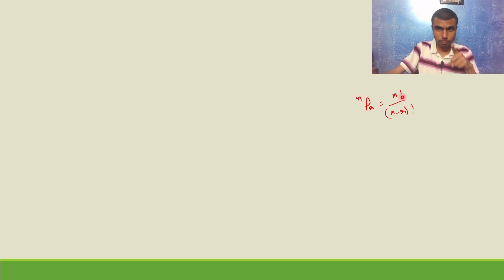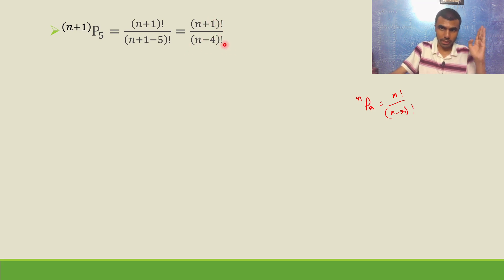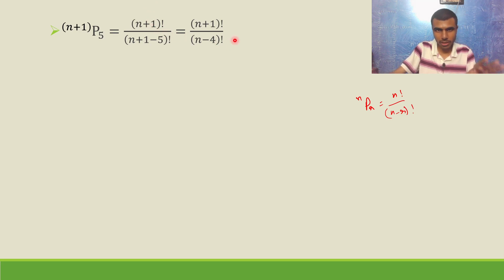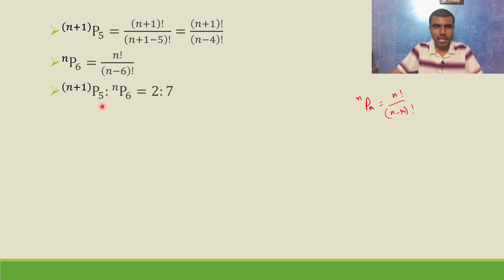So here we are given (n+1)P5. In place of n put n+1, in place of r put 5. So (n+1)P5 is nothing but (n+1) factorial by (n+1-5) factorial, which is (n+1) factorial by (n-4) factorial. And nP6 is n factorial by (n-6) factorial.